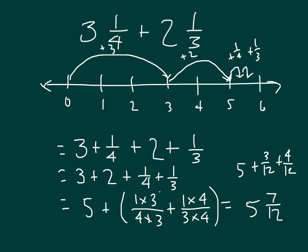So 3 and 1/4 plus 2 and 1/3 is equal to 5 and 7/12. What I did is I added together the whole numbers, and then I added together the fractional parts, making sure to get a common denominator.